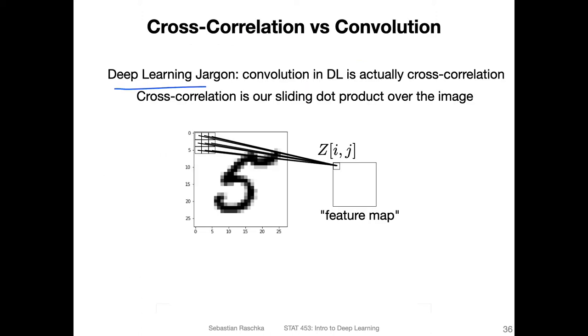Cross-correlation or convolution is another one of these jargon terms. So in deep learning, we sometimes use words from other fields that have a different meaning. And convolution would be one of those. The convolution in deep learning is actually what is more commonly known as cross-correlation.